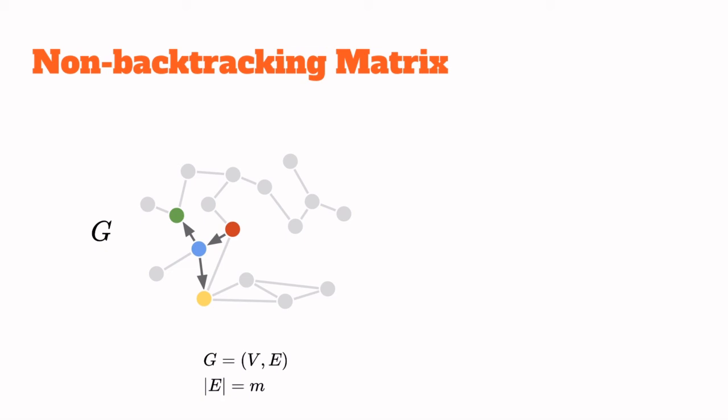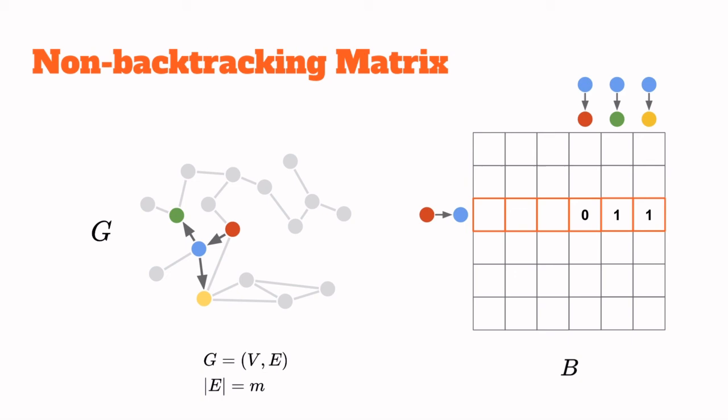Say there is a random walker that does not trace backtracks, that just moved from the red node to the blue node. Then the matrix will have a row for the directed edge from red to blue and a column for the directed edge from blue back to red. The corresponding entry will be zero, meaning that the walker cannot go back to where it came from, whereas other entries will be one for any other valid step, for example from blue to green or blue to yellow.